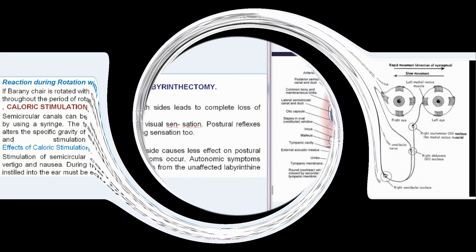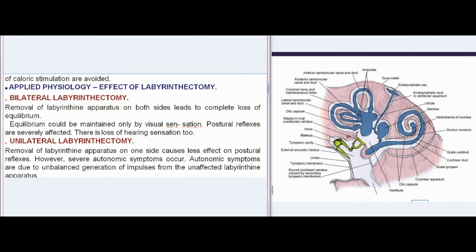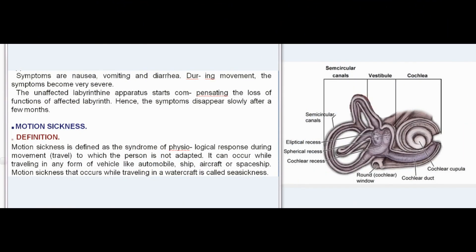Applied physiology — effect of labyrinthectomy: bilateral labyrinthectomy (removal of labyrinthine apparatus on both sides) leads to complete loss of equilibrium; equilibrium can only be maintained by visual sensation. Postural reflexes are severely affected, and there is loss of hearing. Unilateral labyrinthectomy causes less effect on postural reflexes but severe autonomic symptoms (nausea, vomiting, diarrhea) due to unbalanced impulse generation from the unaffected side. The symptoms become very severe during movement but disappear slowly after a few months as the unaffected labyrinth compensates.